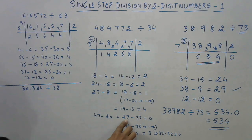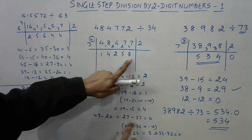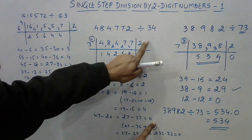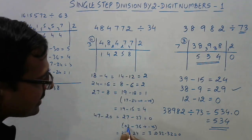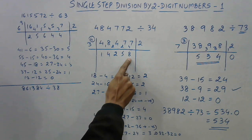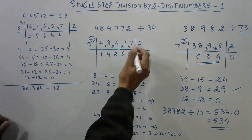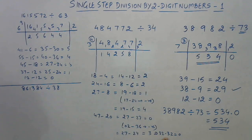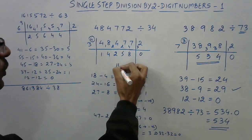Now we have 27 as the next value. I want to get close to 27, so 3 times 9 is 27 — but taking 9 makes the next dividend negative again. So I purposefully take 1 less, that is 8. With quotient digit 8: 3 times 8 is 24, giving remainder 3, making it 32. Then 4 times 8 is 32, and 32 minus 32 is 0. So the answer is 14258.